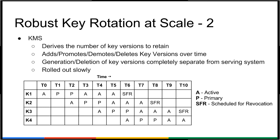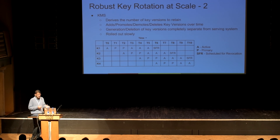We do not require transactional semantics for key generation, because the rollout ensures every reader will have access to a key before any writer has used it. For example, T2, T3, and T4 can interoperate independently of which version of the key set they have access to.